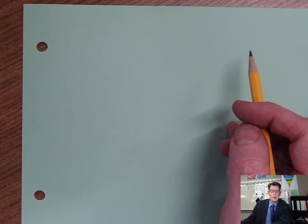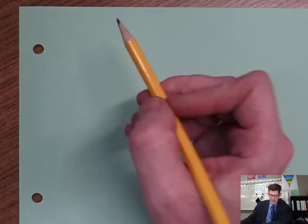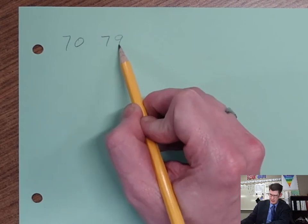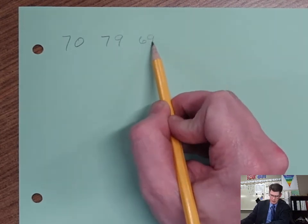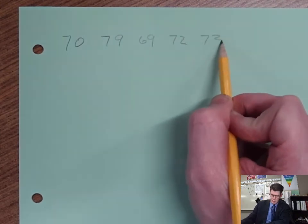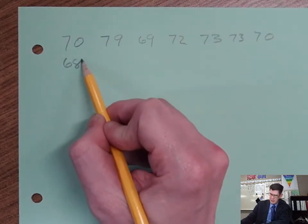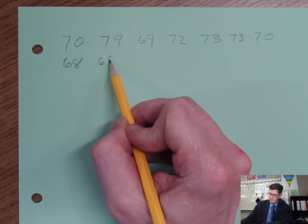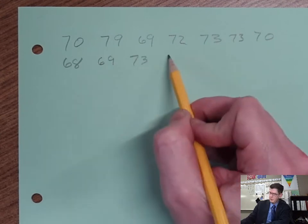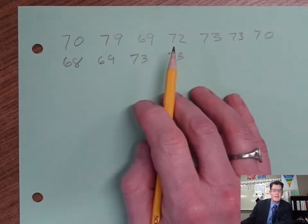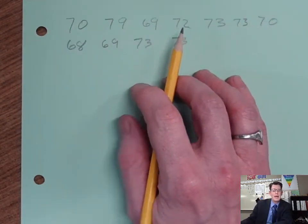Let's say you've got yourself a list of numbers. Let's say people went and gave you their height. The heights that we were given were 70, 79, 72, 73, 70, 68, 69, 73, and 73. So let's say you got people's heights and there they are.